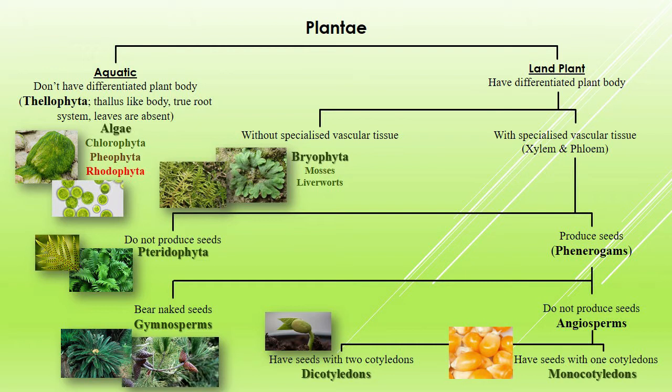Plants which grow on land are the terrestrial plants. Then we have to consider whether vascular tissues like xylem and phloem are present or not. If xylem and phloem tissues are not present, then they are included under bryophyta. On the basis of characteristic features, bryophyta are once again divided into two groups: liverworts and mosses.